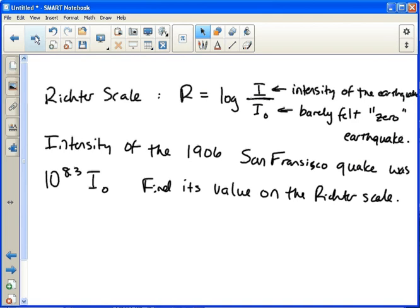So this is true facts here. The intensity of the 1906 San Francisco earthquake was 10 raised to the 8.3 times bigger than that zero earthquake, the barely felt earthquake.